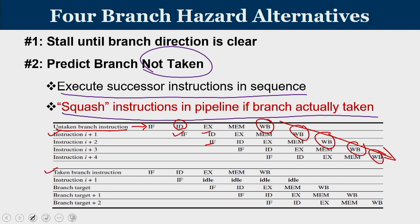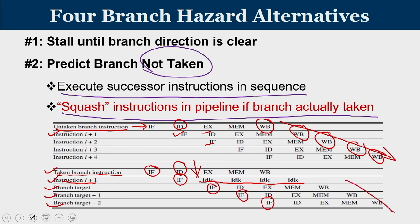In the second case, assume the branch is actually taken but our prediction is that it will not be taken. So when the branch instruction is being fetched, the very next cycle the adjacent instruction is fetched. The moment we decode the branch, we learn its outcome — and it is actually taken. So whatever was fetched, instruction i+1, is no longer needed. We flush it out — that is called the idle stage — and feed the remaining pipeline stages with no-operations. Then we fetch the target instruction, followed by target+1, target+2, and so on. A predict-not-taken approach works really well if the majority of branch instructions are not taken.